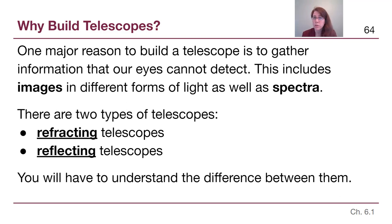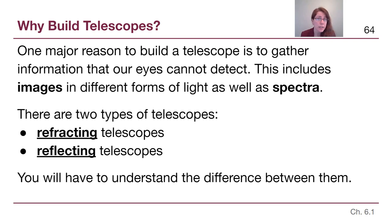It's important to note that what we will be talking about is not just images like the previous two slides showed us, but also spectra, which we talked about throughout Chapter 5. The key to getting either an image or a spectrum from an object is we need to collect the light from that object. And there are two different types of telescopes that give us different ways to collect that light.